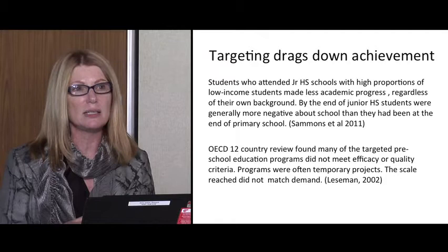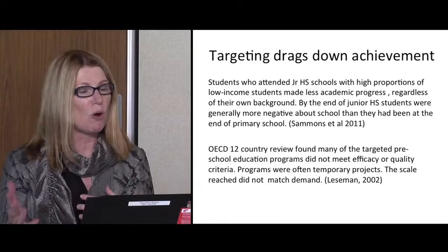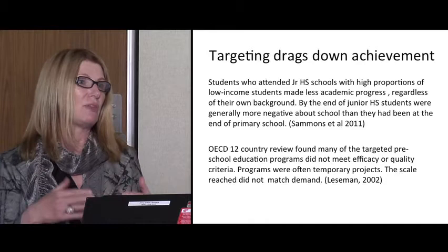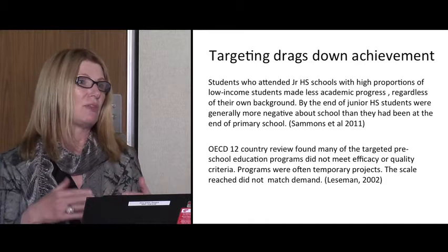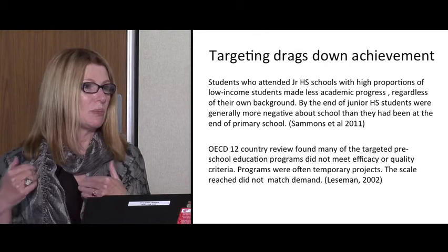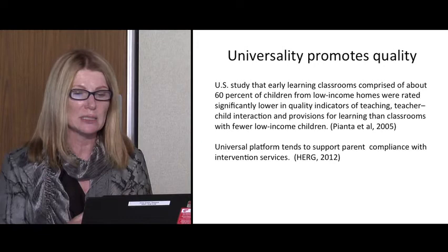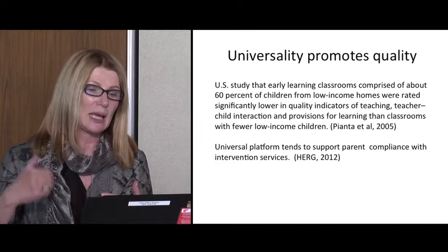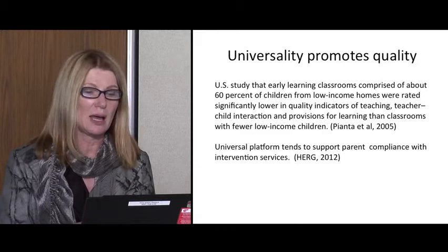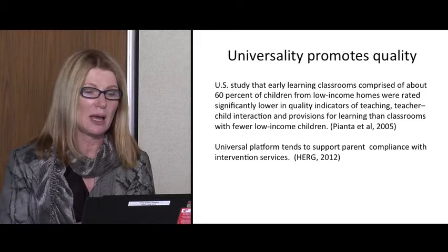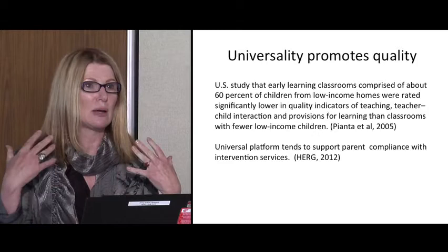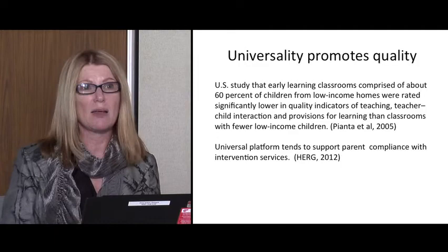Looking at OECD work in the 1990s reviewing 12 member states — examining what tended to support better quality, more access, and more equitable access — countries that took a more state-based, publicly managed, and universal approach were more likely to provide equitable access to more children than those that took a more market or targeted approach. There is also some evidence that a universal approach promotes quality in programming, with studies showing that programs dominated by middle-income children tend to have lower quality than more mixed programs.